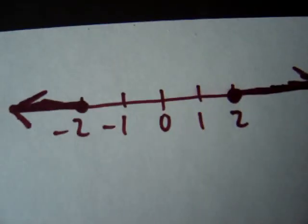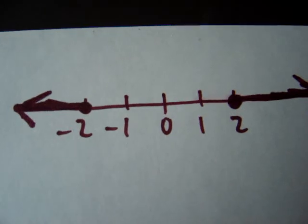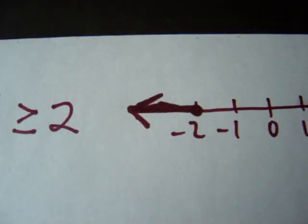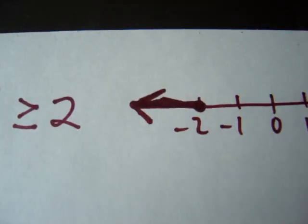Looking at the number line, you can see that the distance from 0 is greater than or equal to 2 and also less than or equal to 2.